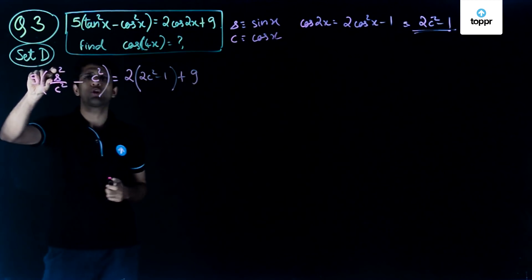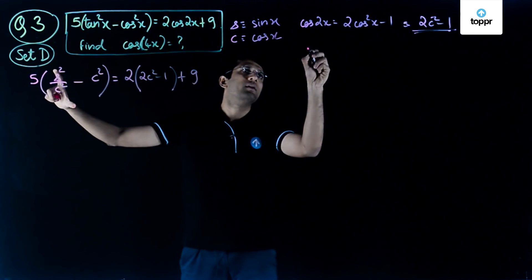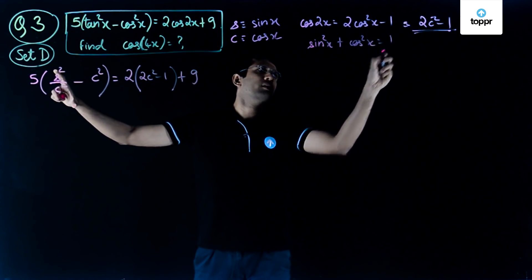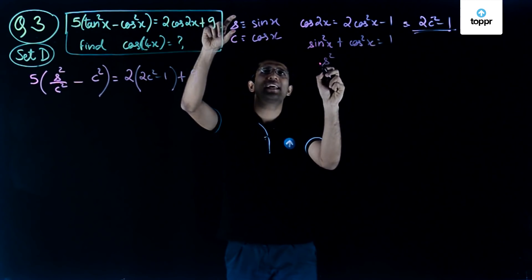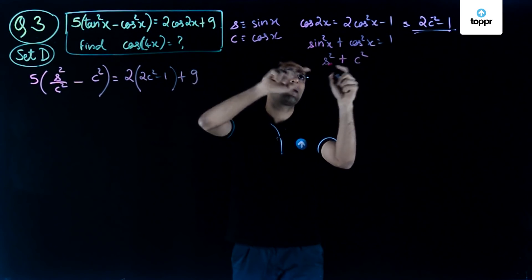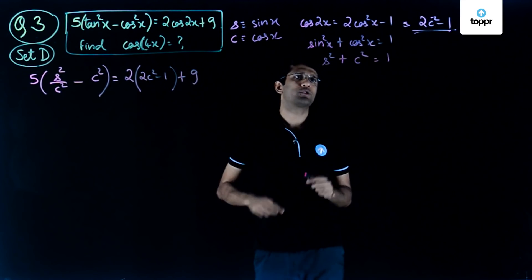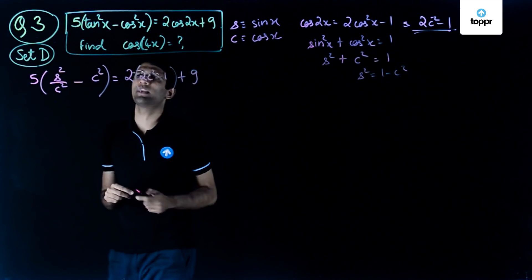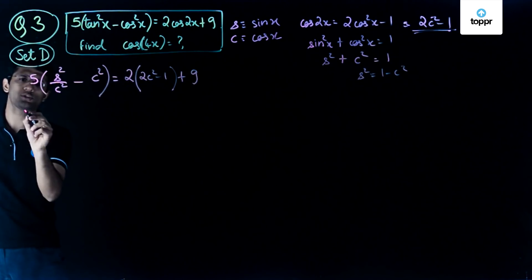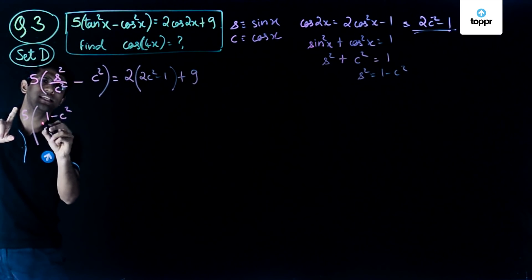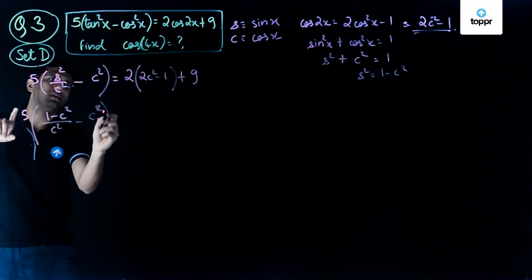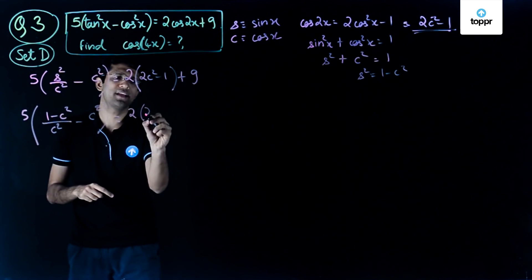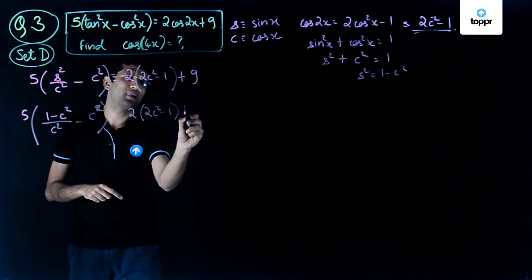Note that if I write sin squared as 1 minus cos squared, using the identity sin squared x plus cos squared x equals 1, in our notation s squared plus c squared equals 1. So I can replace s squared by 1 minus c squared. Wherever s squared appears, I write 1 minus c squared. So I get 5 times 1 minus c squared upon c squared minus c squared on the left hand side, and 2 times 2c squared minus 1 plus 9 on the right hand side.